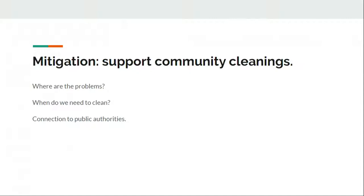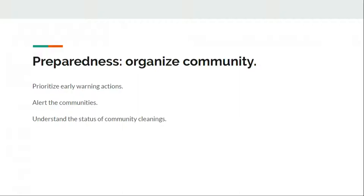We believe centralizing drain information, which is very critical in causing floods, could help in managing emergencies — especially to mitigate and support community cleaning. It is easy to know where the problems are when you have enough data centralized in one place, and easy to know when to clean. It also connects communities with public authorities. Communities report their cleanliness status using the platform, and municipalities can visit the platform to know where in the city help is needed. During preparedness, this platform could also support prioritizing early warning action and understanding the status of community cleanings.